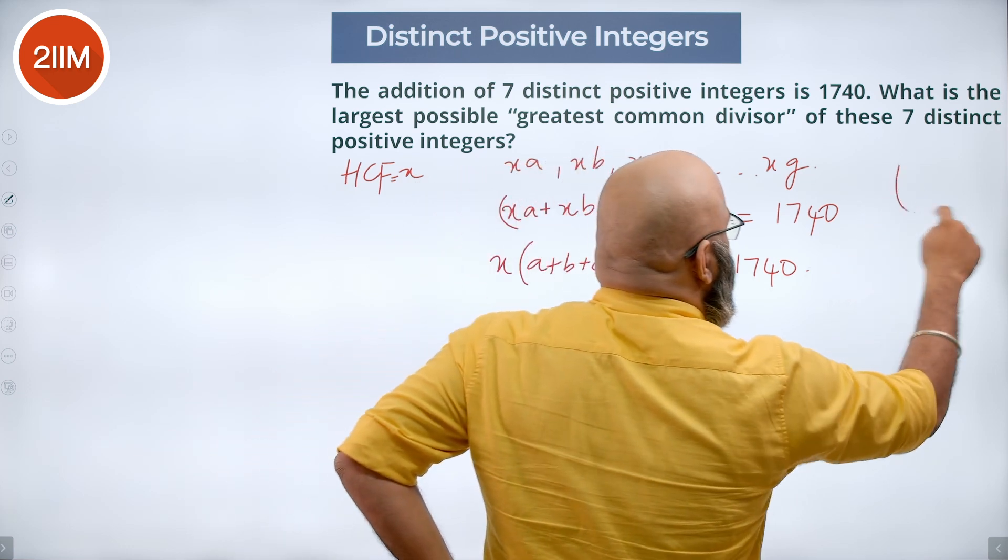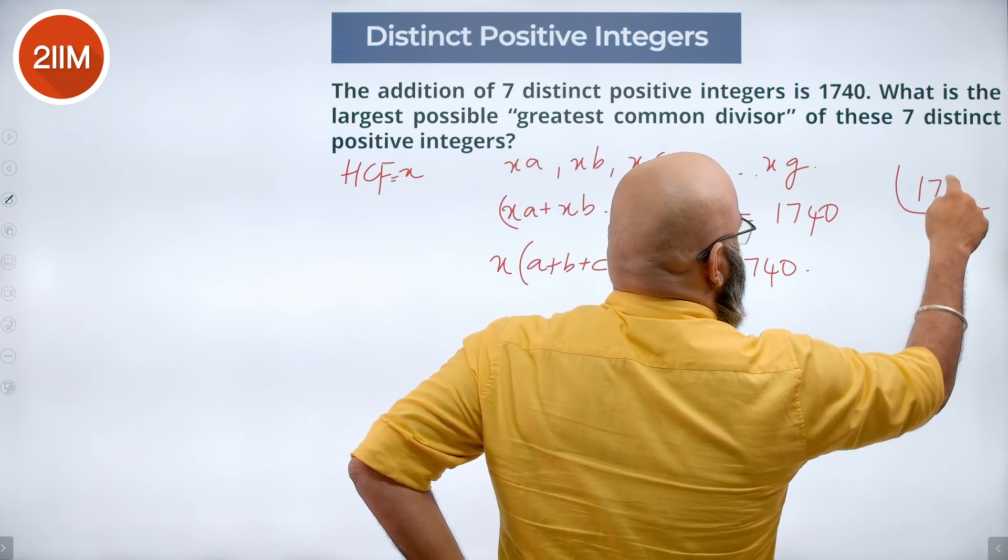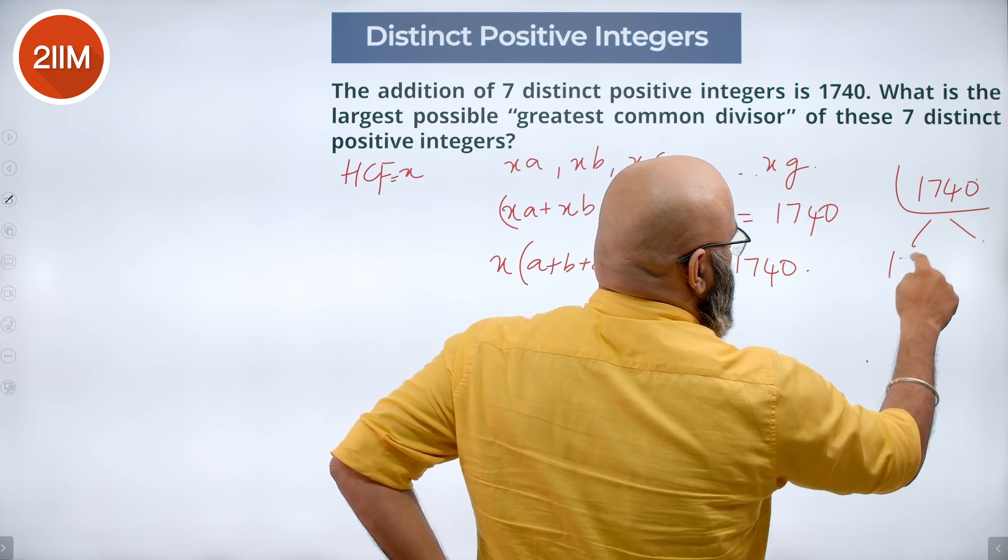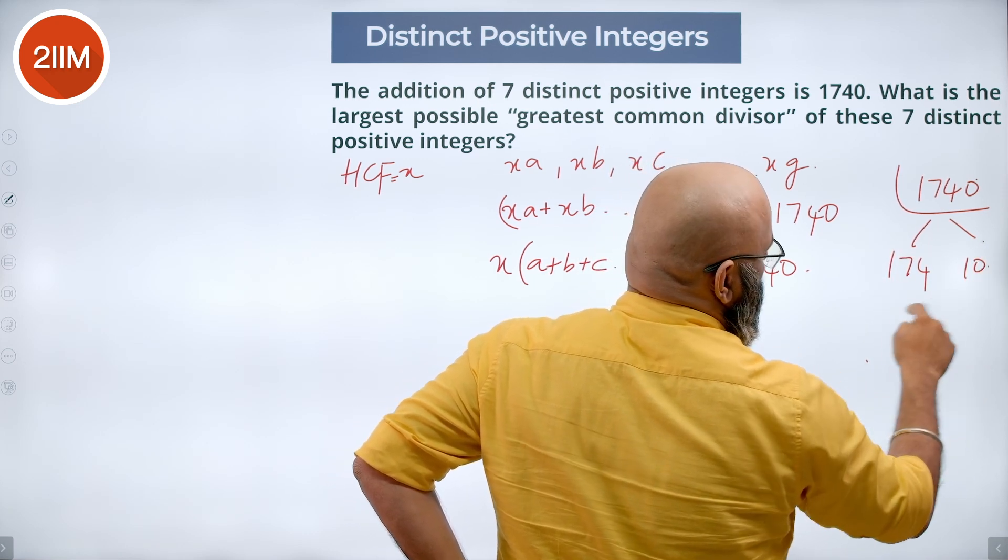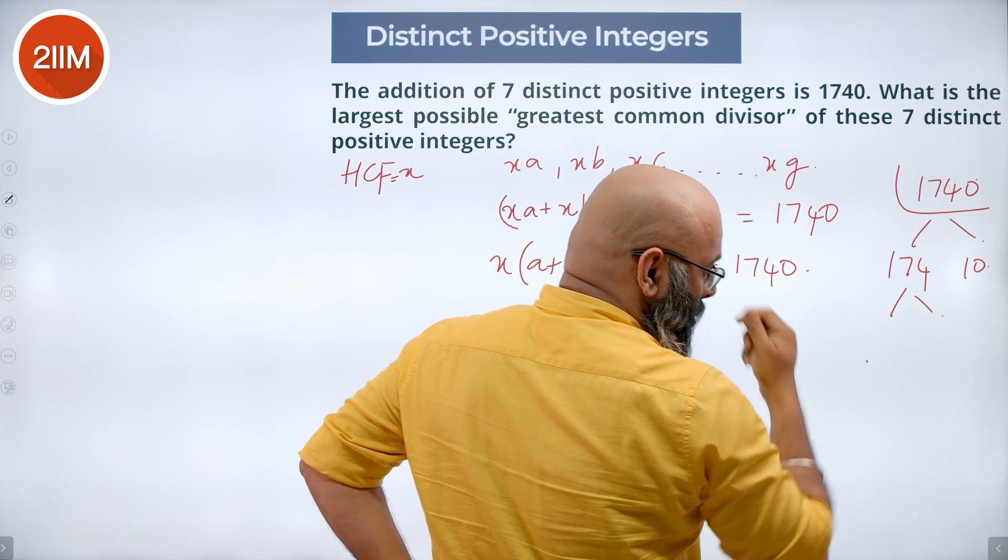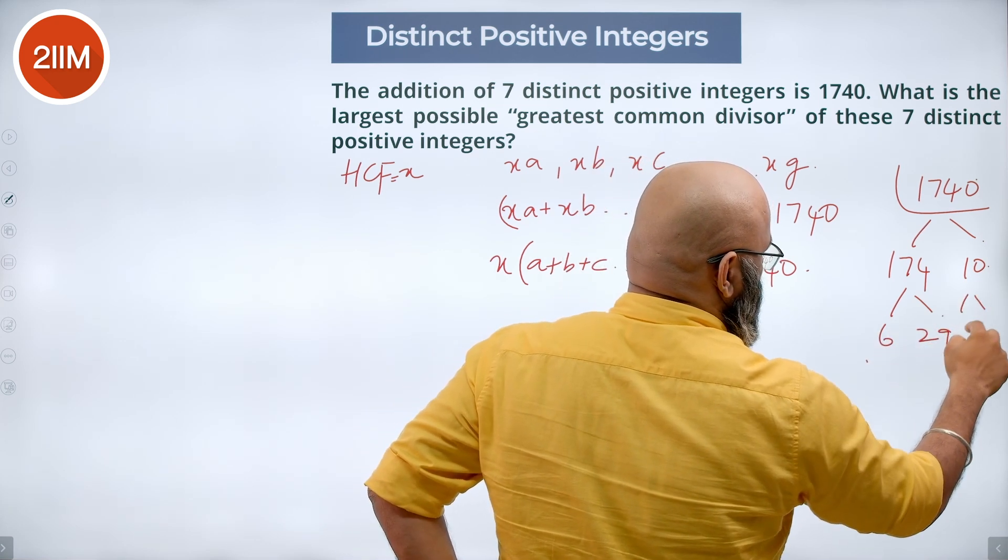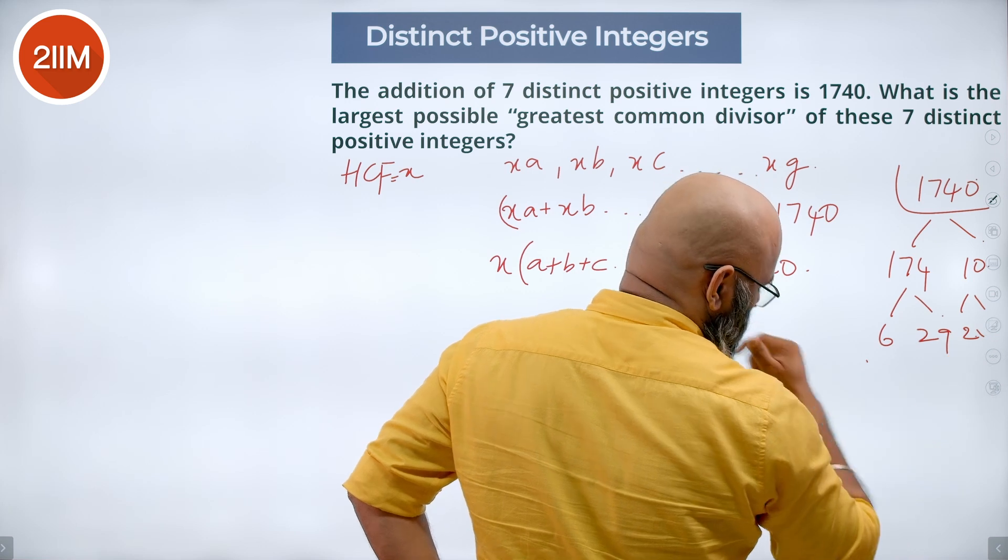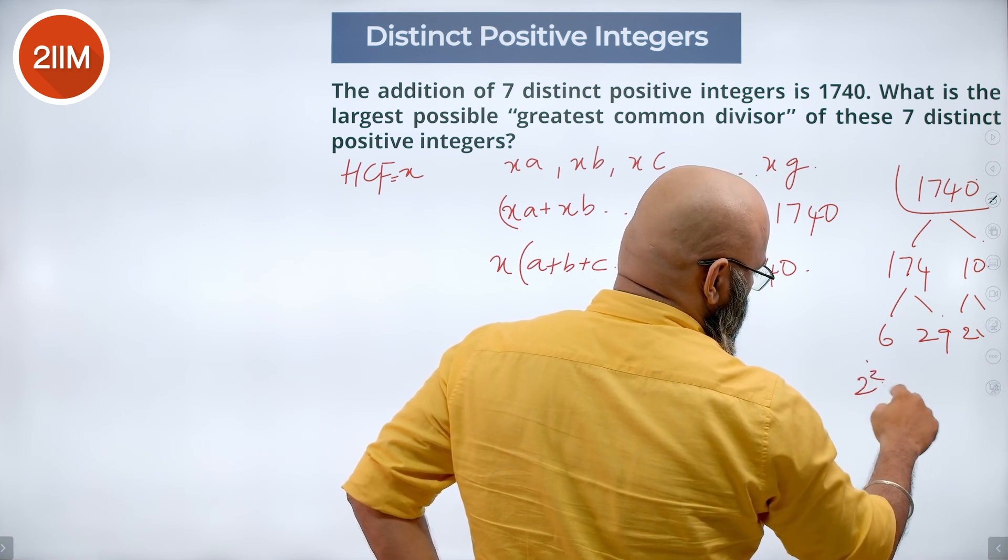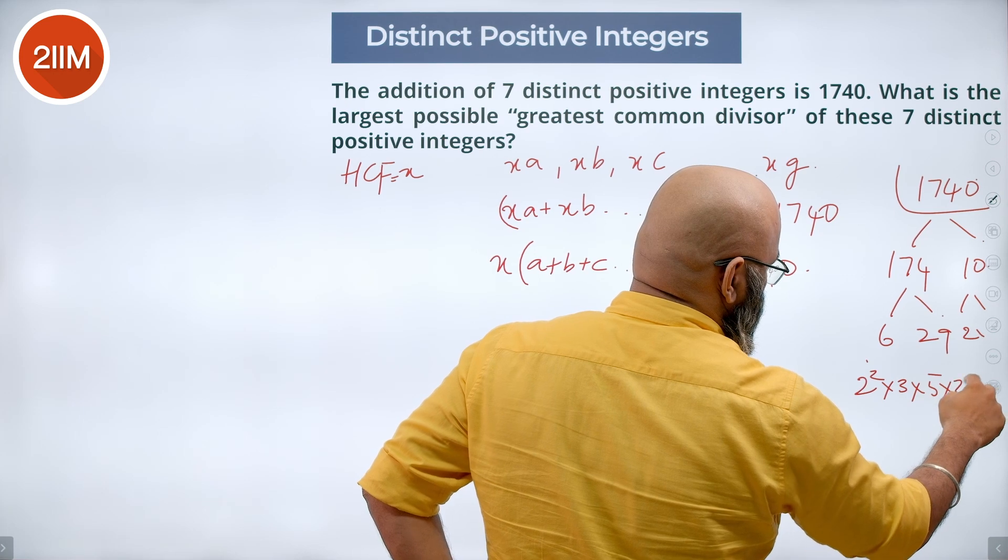Now just in case we need, let us take 1740. I am splitting this: 174, 10. 174 goes in 6, 29 times and this is 2 into 5. So we have 2 square into 3 into 5 into 29.